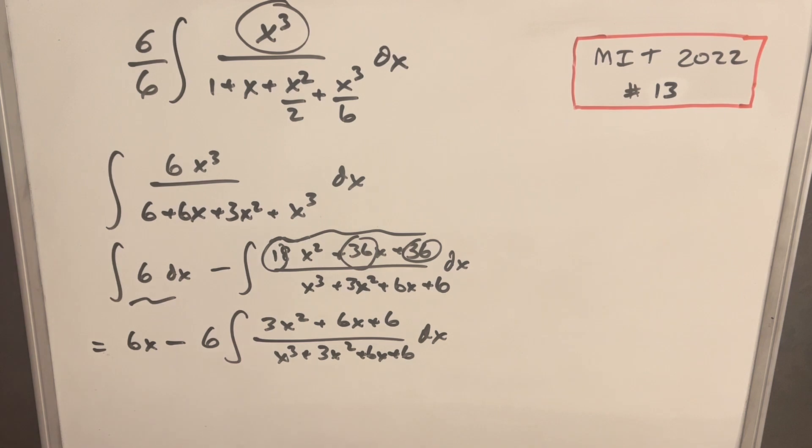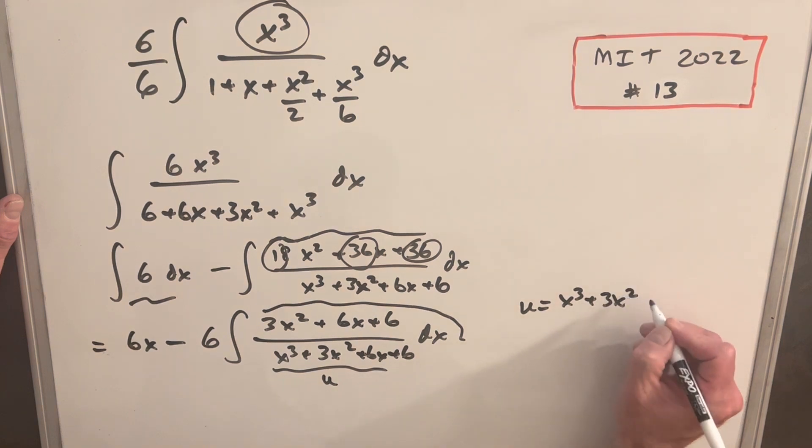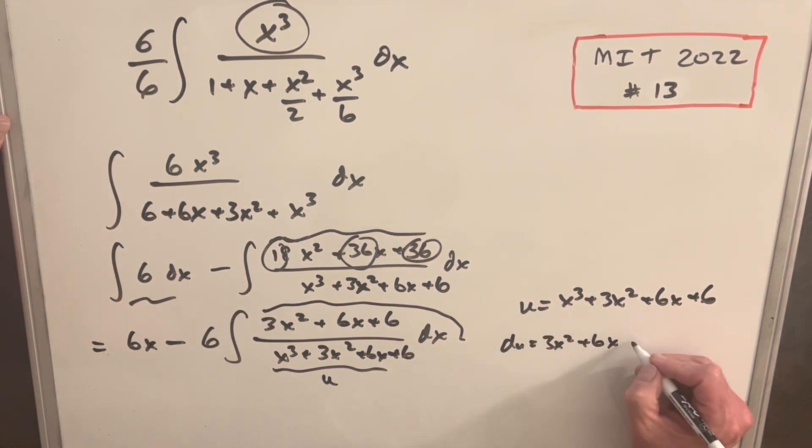And you may see it now, if we just make this our u value for a u substitution, then our du is going to be up here. So let's do that. We'll say u is x cubed plus 3x squared plus 6x plus 6. And then our du is 3x squared plus 6x plus 6 dx.